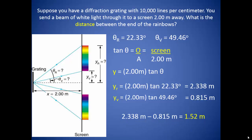And since we want to know the size of the rainbow, we simply take the distance of the red light and subtract the distance of the violet light, and find 1.52 meters.